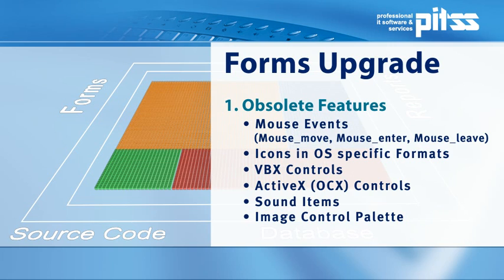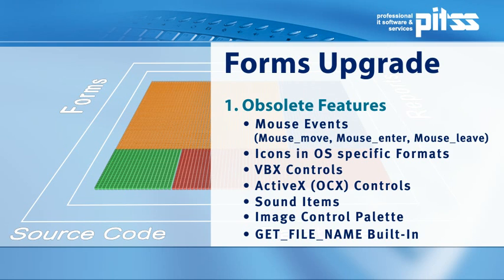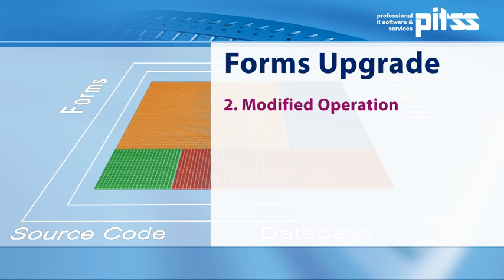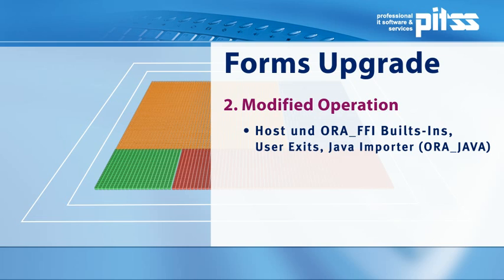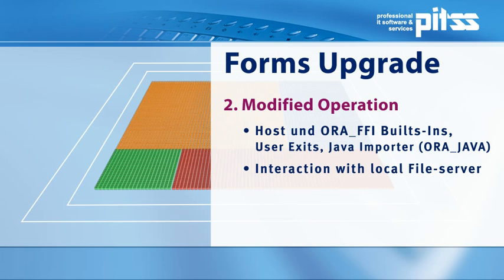One example is replacing a client functionality such as GetFilename with WebUtil, an Oracle standard library that enables you to work from an application server. New functionalities are the result of program transfers from the client environment to the application server. These functions are available, but their content needs to be adjusted to the new environment — for example, host, ORIFFI, or interaction with a local file system.